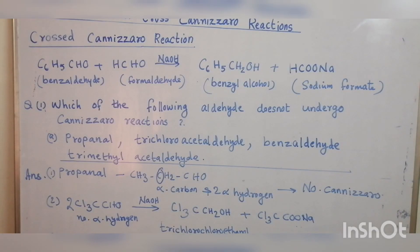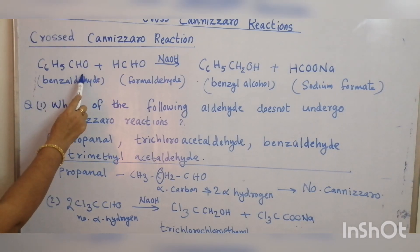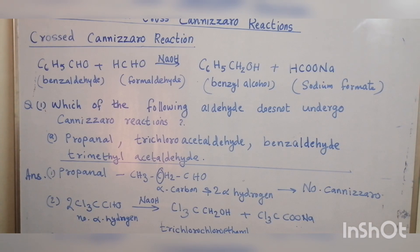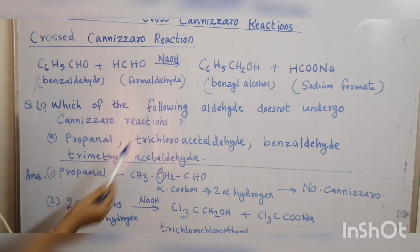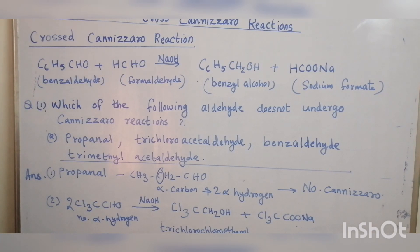We have seen the Cannizzaro reaction. What is a Cross-Cannizzaro reaction? A Cross-Cannizzaro reaction is the reaction between two different molecules of aldehyde in a basic medium, forming an alcohol and the salt of an acid. For example, benzaldehyde and formaldehyde react to give benzyl alcohol and sodium formate. Both oxidation and reduction take place, so it is a redox reaction.